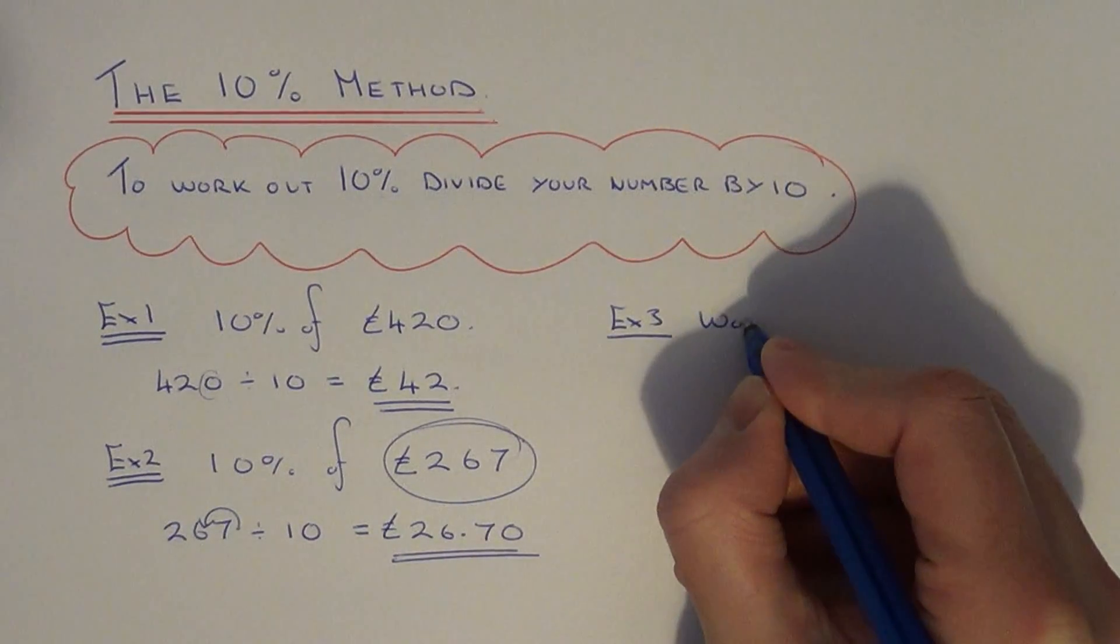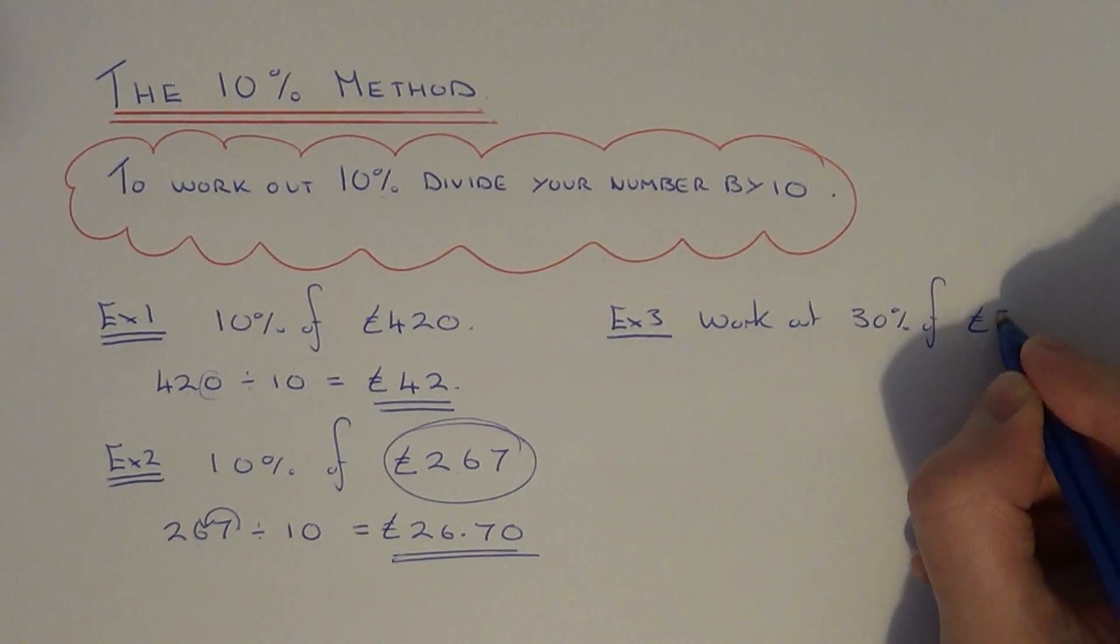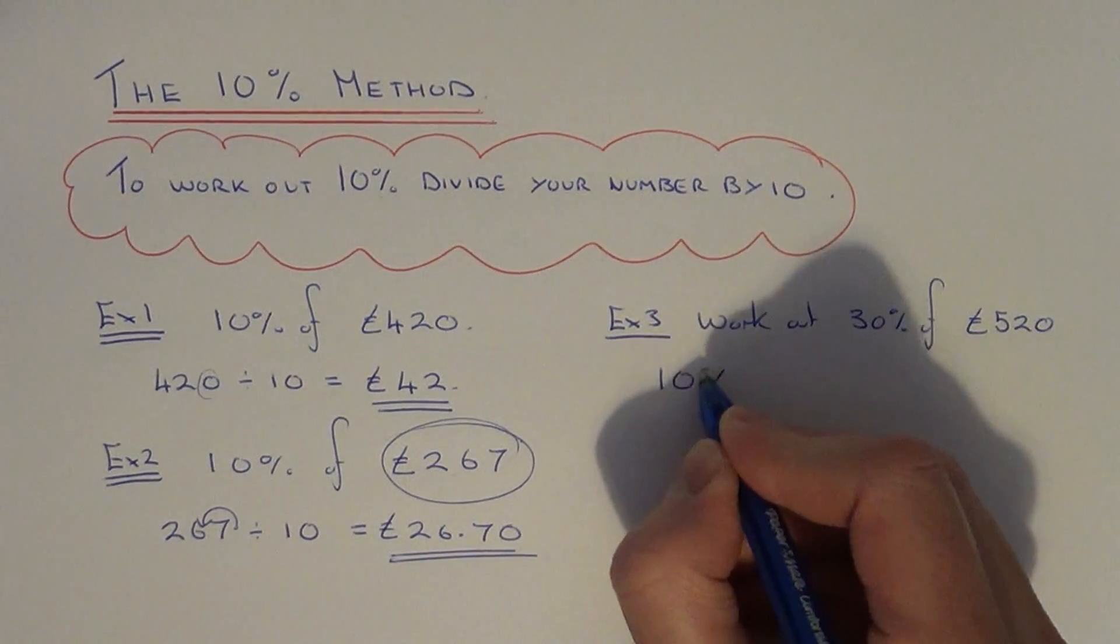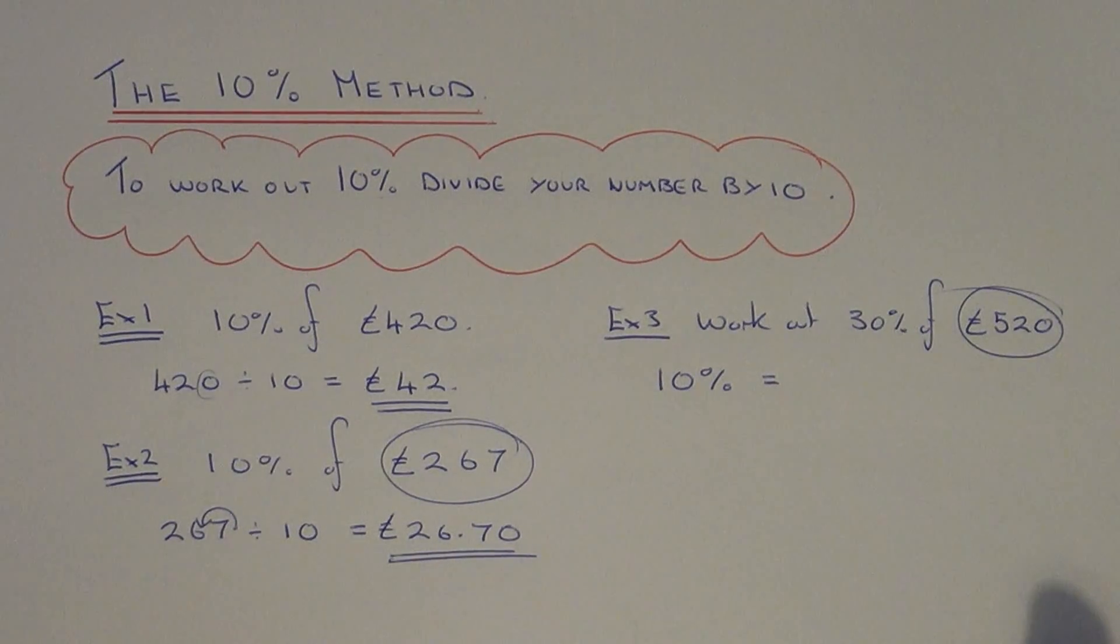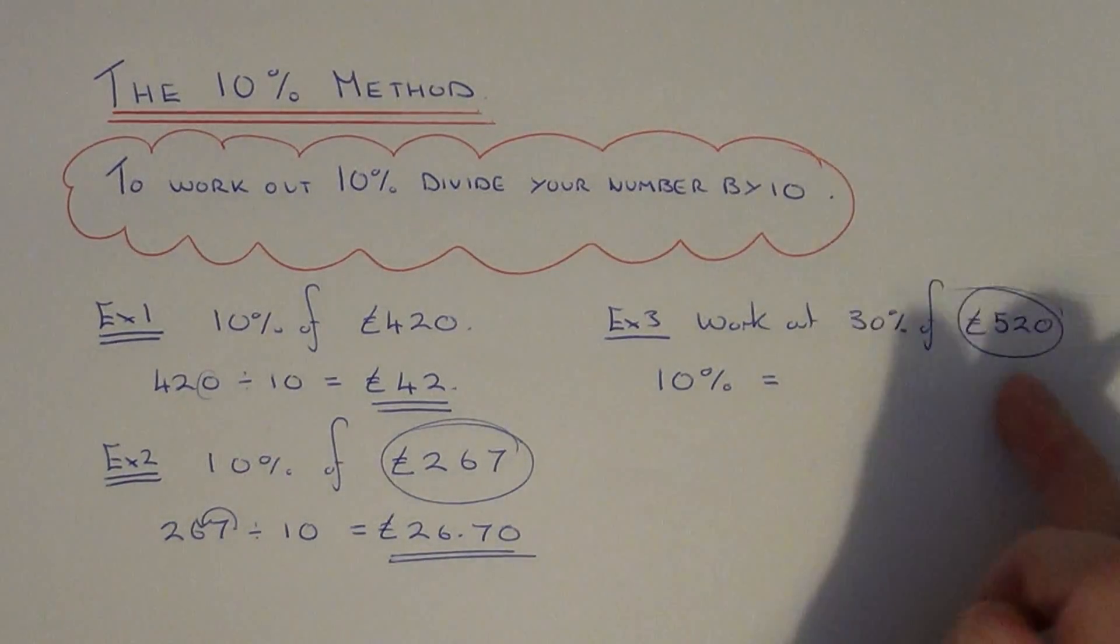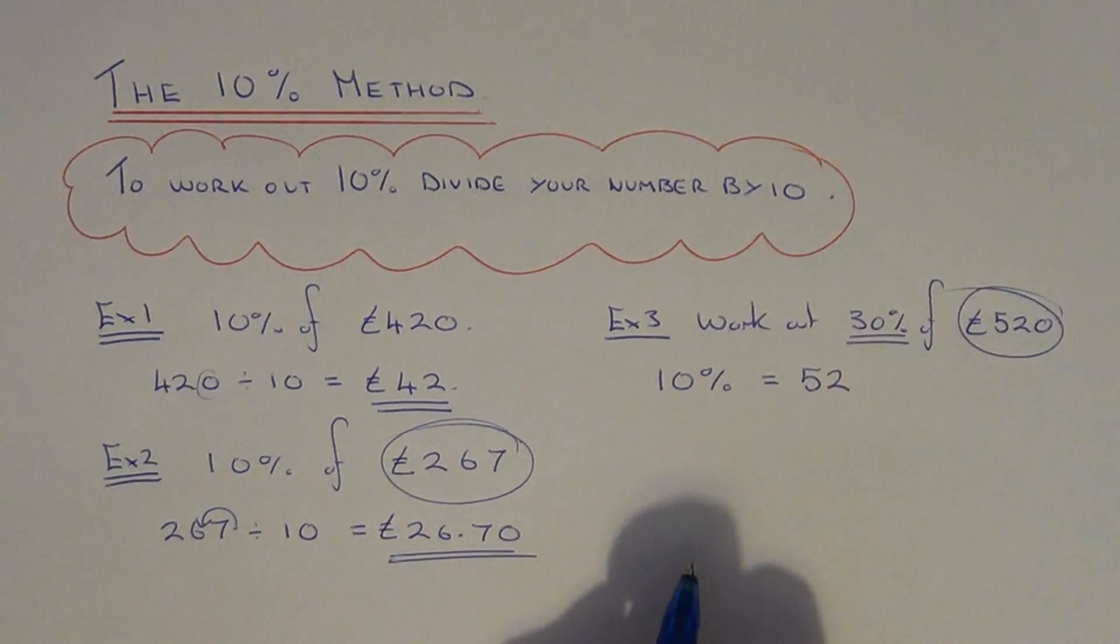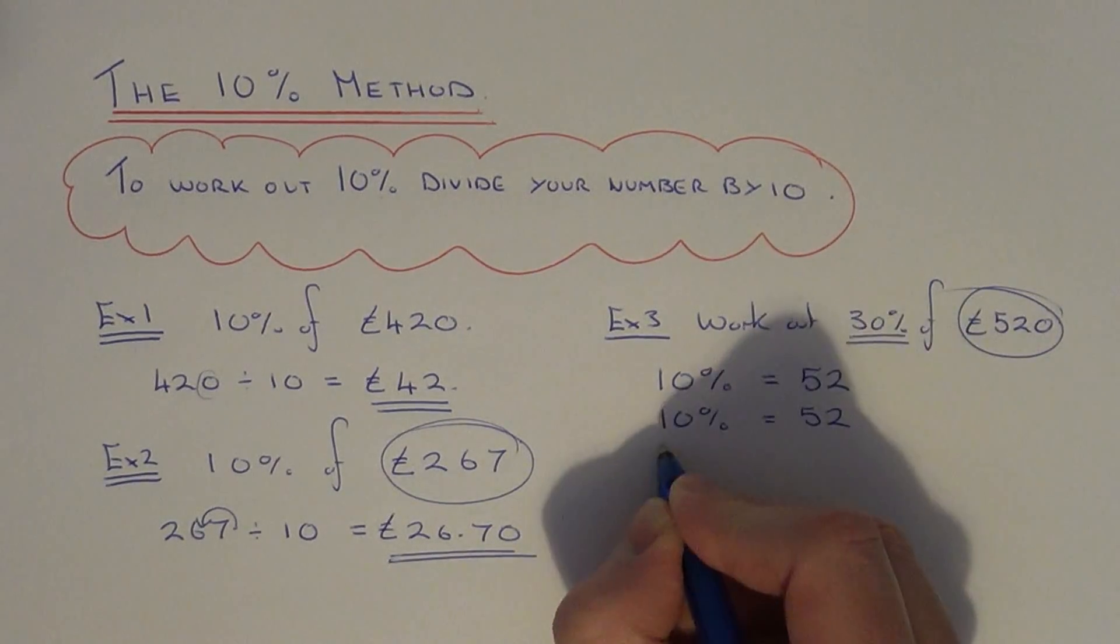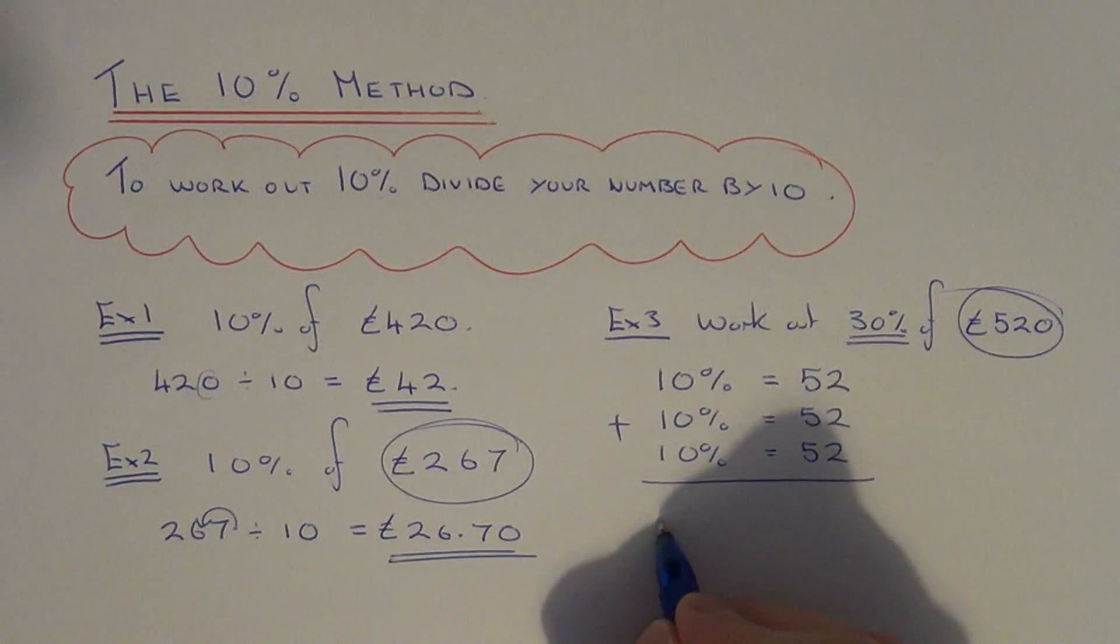We're going to work out 30% of £520. So if you work out 10% first of all, 10% of our amount £520 is £52 because we just divide that by 10. So this time we need 30% so we need three of these 10%. So we can write three of these down and add them up. Alternatively you could do 52 times 3.